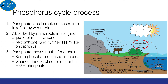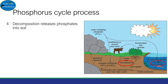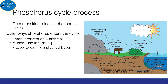The last part of the phosphorus cycle involves the release of phosphate into the soil via decomposition. So far we have discussed the natural process of the phosphorus cycle, but there is another way — human intervention. The use of artificial fertilizers in farming can lead to leaching and eutrophication.